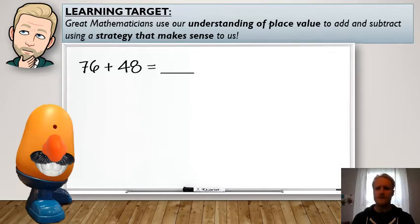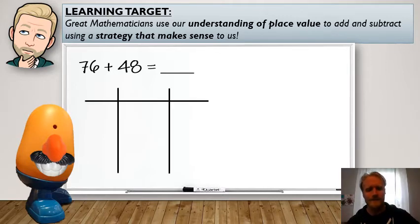All right. So it says 76 plus 48 equals blank. Hmm. All right. So again, we always want to use a strategy that works best for us. So today I'm going to use, eh, I like place sticks and dots. Again, I like to visually see it. So what do I need to do first? You got it, guys. You got to set up that HTO chart.